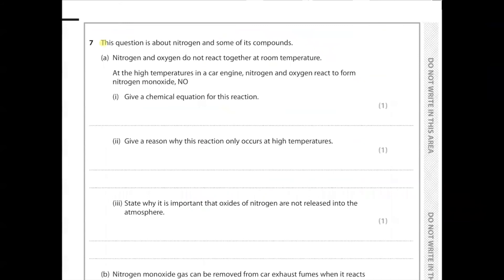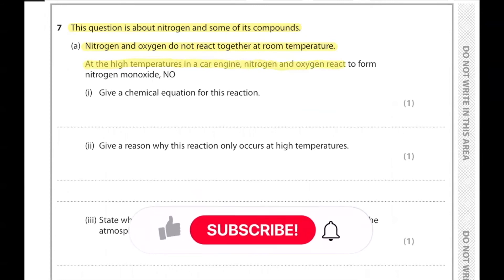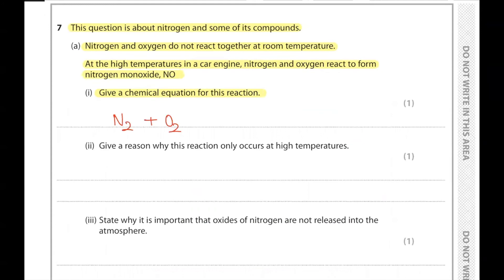Question number 7. This question is about nitrogen and some of its compounds. Nitrogen and oxygen do not react together at room temperature. At the high temperature in the car engine, nitrogen and oxygen react to form nitrogen monoxide. Give a chemical equation for this reaction. Nitrogen reacting with oxygen, both are diatomic molecules. N2 plus O2 producing NO. To balance it out, we'll have to put a 2.